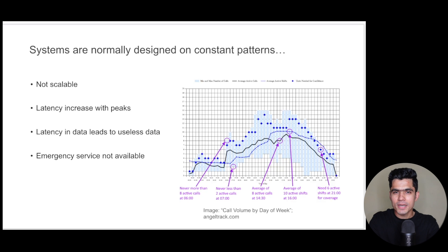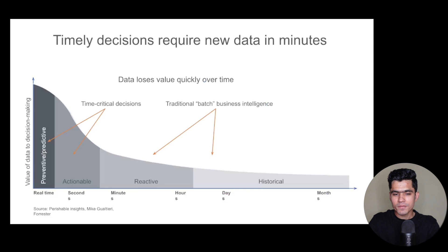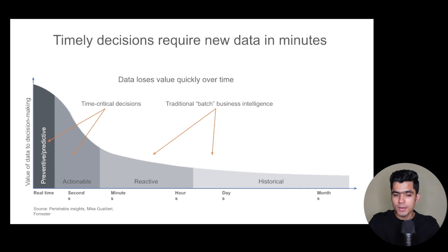Generally systems are designed on normal patterns, but some are not scalable and latency increases at peak load. If there is an accident, the latency of the data also increases because systems are not able to capture it. When latency increases, it leads to useless data and we won't be able to provide services in a shorter period of time. Data that comes in real-time or within seconds is time-critical. As time progresses to minutes, hours, and days, data becomes traditional batch business intelligence data and starts losing its value.